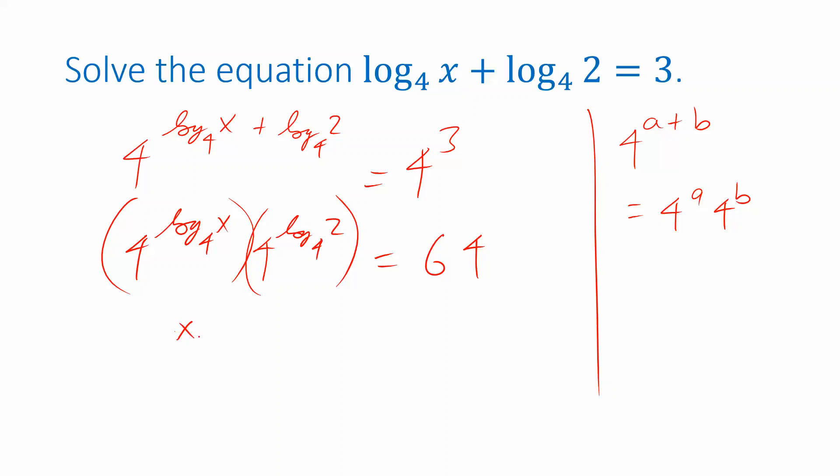Now on the left side, I have these two things multiplied together. 4 to the log base 4 of x gives me x. 4 to the log base 4 of 2 gives me 2. And so again, I can isolate x by dividing both sides by 2, giving me the same answer. Both of these approaches work.